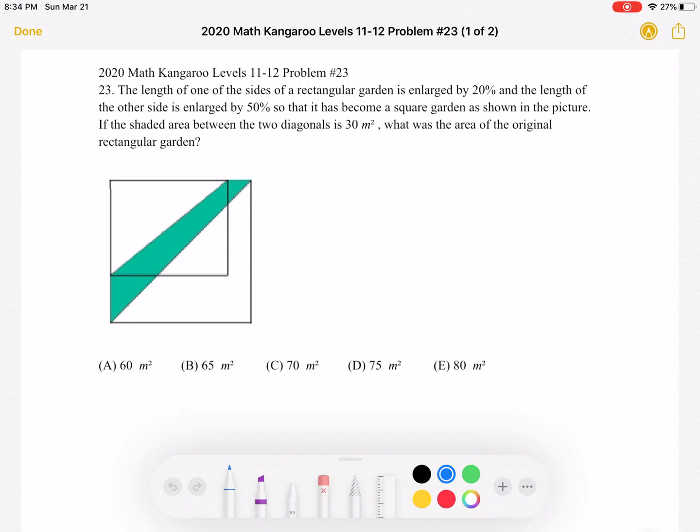what was the area of the original rectangular garden? A: 60 meters squared, B: 65 meters squared, C: 70 meters squared, D: 75 meters squared, or E: 80 meters squared.